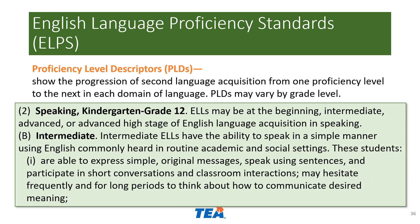The second part of the ALPS to be familiar with are the proficiency level descriptors, or PLDs. These identify the level of proficiency in each domain, divided into four levels: beginning, intermediate, advanced, and advanced high. PLDs do vary by grade level — kindergarten and first grade standards are different from second through twelfth grade. This example comes from the speaking domain at the intermediate level, describing a student who is able to express simple original messages, speak using sentences, and participate in short conversations, though they may hesitate frequently or for long periods.